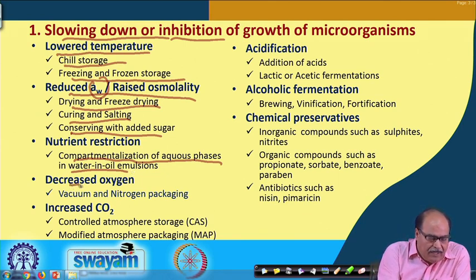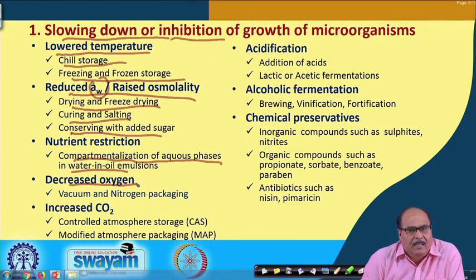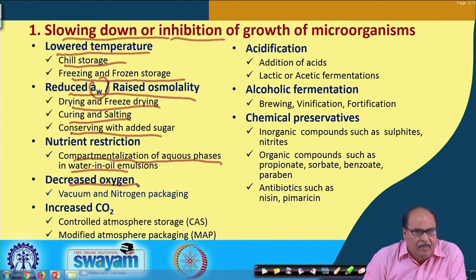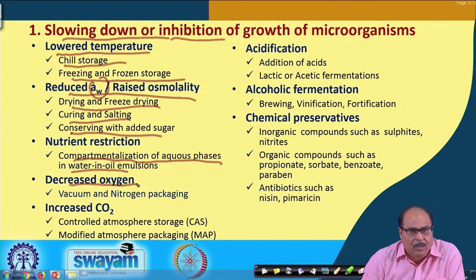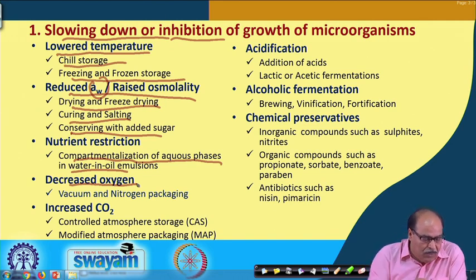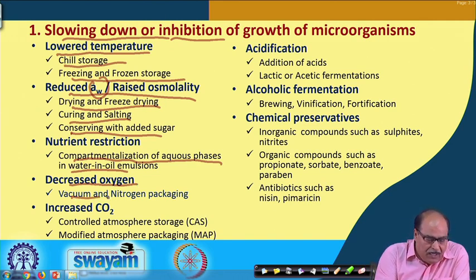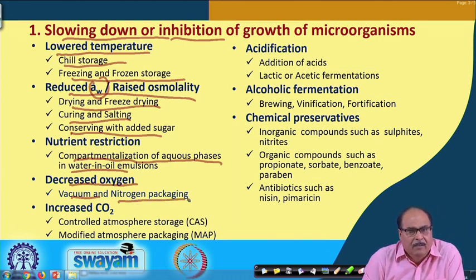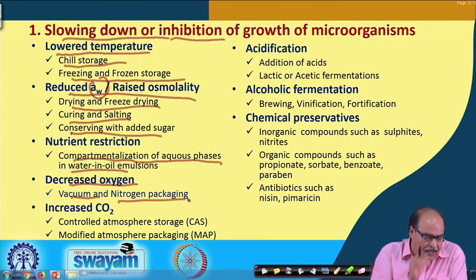Decreased level of oxygen in the environment around or within the food is another way of slowing down or inhibiting the growth of microorganisms in food. Vacuum technology and nitrogen packaging are common examples that work on this basis.